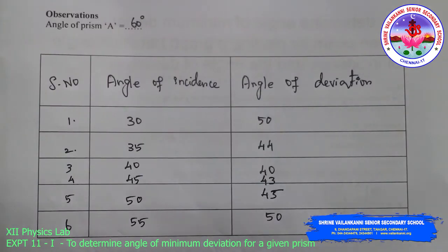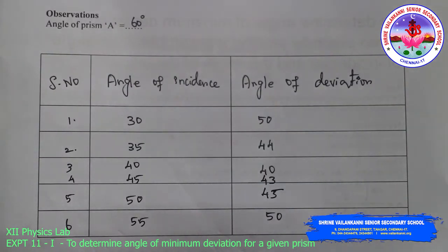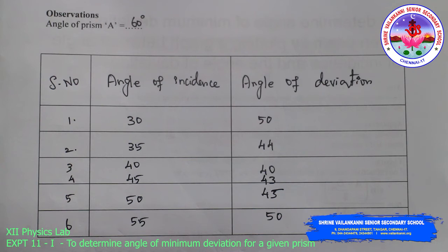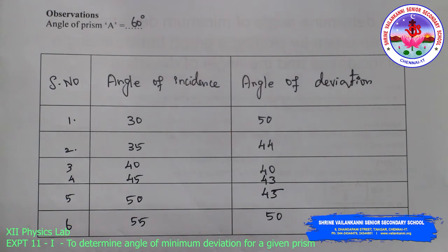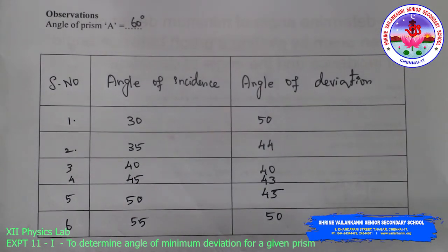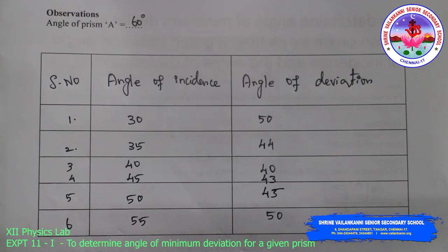Observation. Angle of prism A = 60 degrees. For angle of incidence and angle of deviation observed through the activity: for incidence 40°, deviation 40°; for incidence 45°, deviation 43°. Similarly, different angles of incidence give different values of deviation.